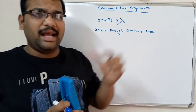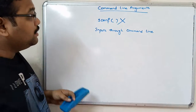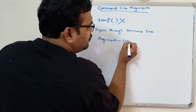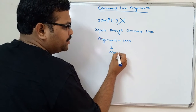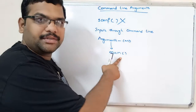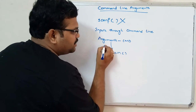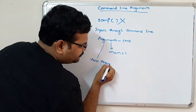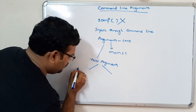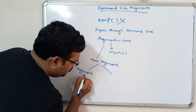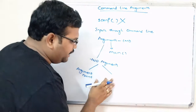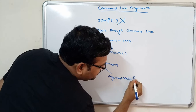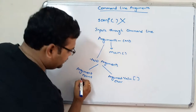We need not use scanf and still we can execute the programs. Whatever arguments we are passing in the command line, all those arguments should be passed in the main function — they should be written in the main function. There are two arguments we have to write in the main function: one is for argument count, and the second one is argument value. It is an array of character data type, and the first is an integer data type.